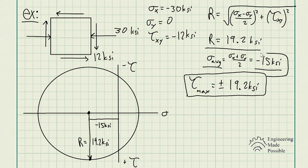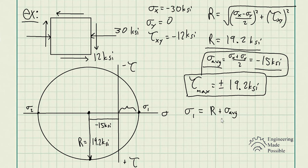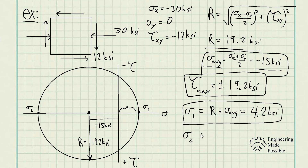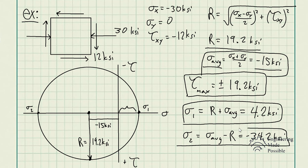For the principal normal stresses, sigma 1 is on one end of the circle and sigma 2 is on the other. Sigma 1 equals the average normal stress plus the radius: -15 + 19.2 = 4.2 ksi. Sigma 2 equals the average normal stress minus the radius: -15 - 19.2 = -34.2 ksi.